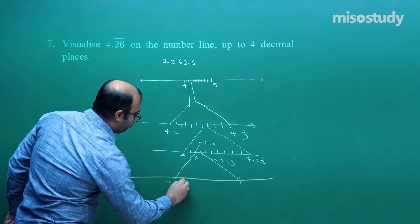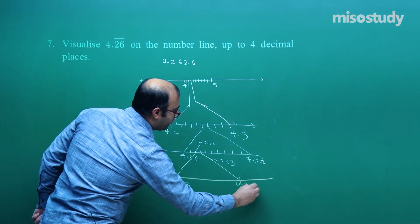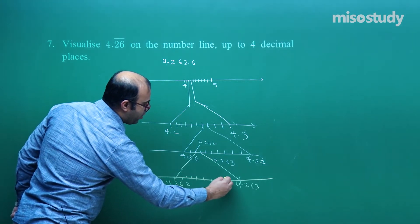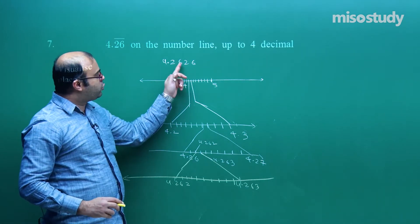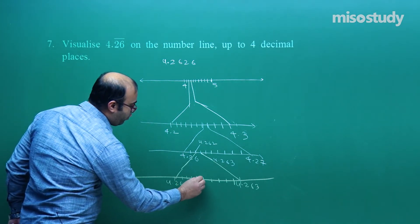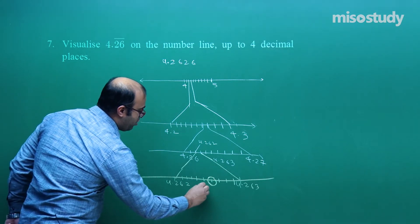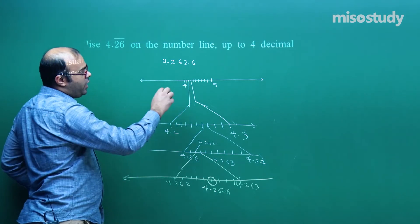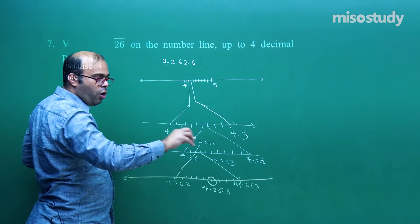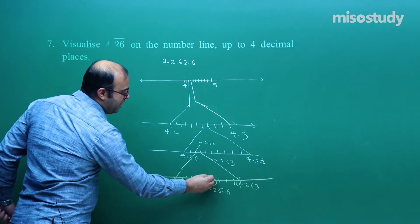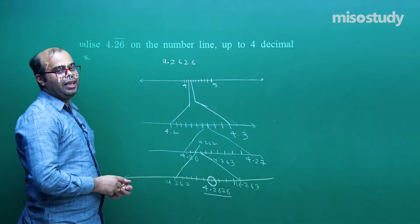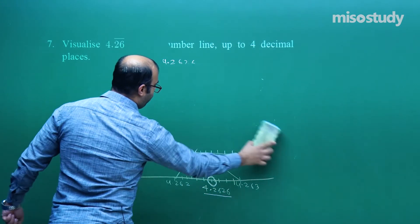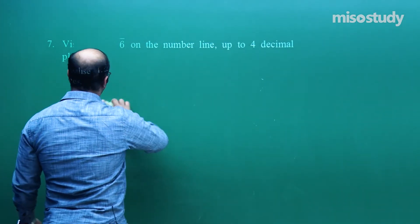On the final magnified segment, 4.262 to 4.263 is divided into 10 equal parts and the 6th point is 4.2626. So 4.2626 is located here. We have magnified 4 times in total using successive magnification to find that 4.2626 lies at this point on the number line.